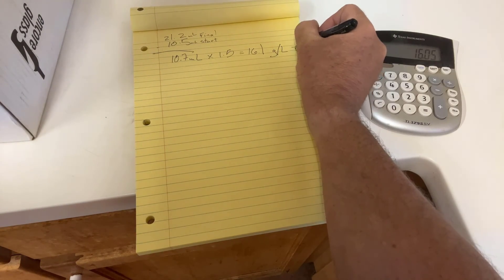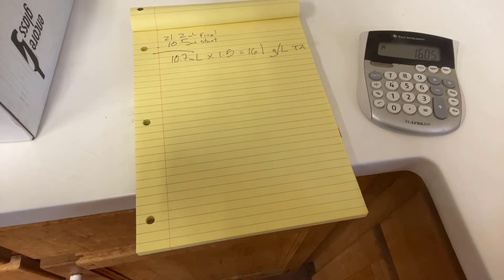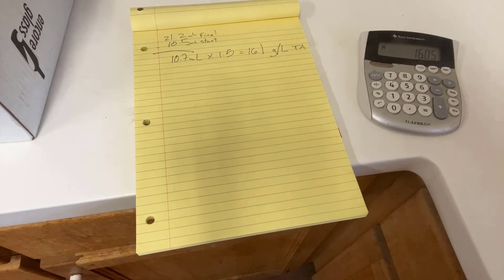Keep in mind in the U.S. we measure titratable acidity in tartaric acid equivalents. In Europe it's different. It's sulfuric acid equivalents. So they are not one-to-one. All right. There we go. Easy peasy.